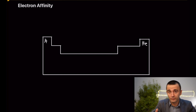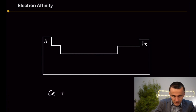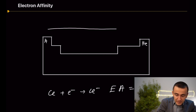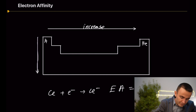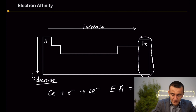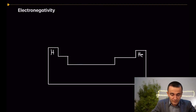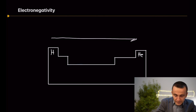Electron affinity is the energy change that occurs when an electron is added to an element in its gaseous state. For example, Cl + e⁻ → Cl⁻ has an electron affinity of about 370 kJ/mol. Electron affinity increases as we move from left to right across a period, and decreases from top to bottom within a group. Note that this trend does not apply to noble gases, as their outermost shell is full and they have no tendency to accept electrons. Electronegativity is an element's tendency to attract electrons within a compound. Electronegativity increases from left to right across a period and decreases from top to bottom within a group.